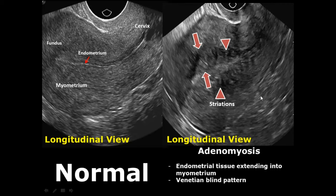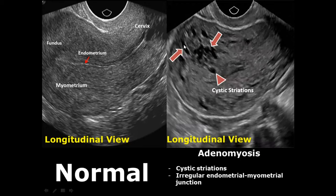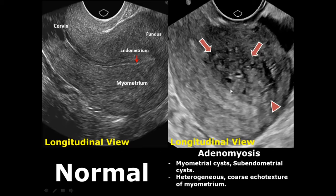Adenomyosis is the presence of endometrial tissue within the myometrium. It shows a typical appearance called the 'Venetian blind pattern,' which has alternating bright and dark bands in the myometrial area. It can also present with cystic striations, irregular endometrial-myometrial junction, myometrial cysts, subendometrial cysts, and a general heterogeneous echotexture.